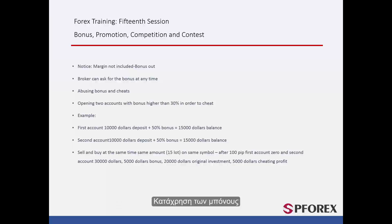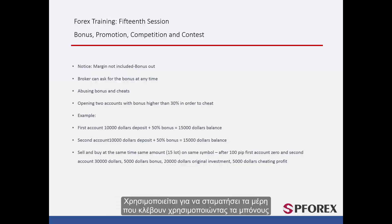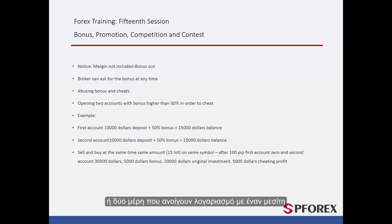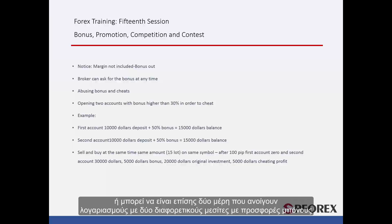Bonus Abuse: this is utilised to stop parties cheating using bonuses. It can be described as when a party opens two accounts under two different names with one broker, or two parties opening an account with one broker, or two parties who open accounts with two different brokers that both have bonus offers.